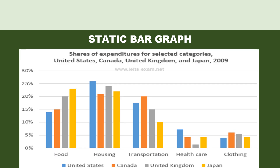Let's look at another static bar graph. This one has a time reference, but it is only for one year, which is 2009. It shows the expenditure of selected categories in four countries — US, Canada, UK, and Japan in 2009. So it is for a single period of time, making it a static bar graph. Either you will have one time period or no time period at all in the static graph.